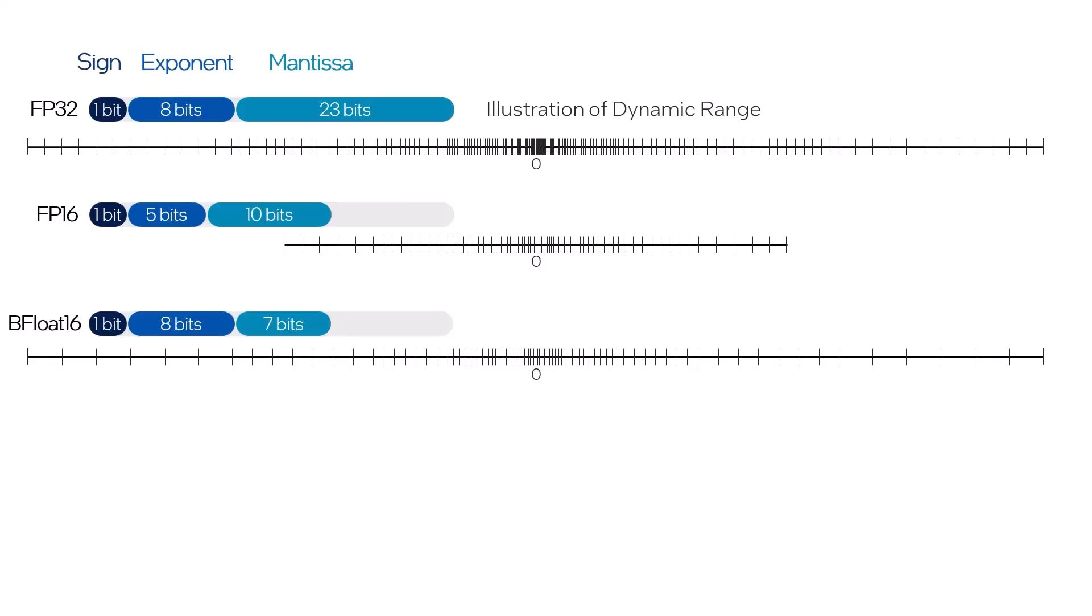Bfloat16 was developed to preserve the range of representable values while giving up a bit more of the precision. It makes for simpler conversion from FP32, truncating the mantissa. And the precision is usually good enough for deep learning, making it an easy way to optimize both inference and training.